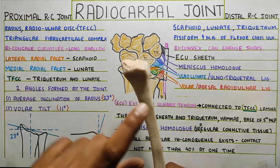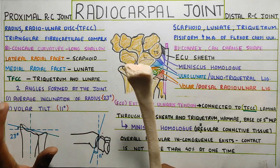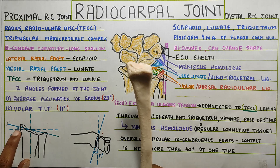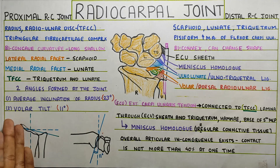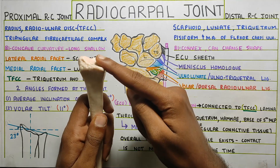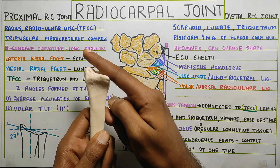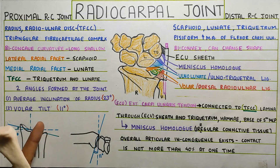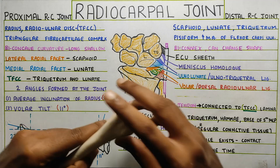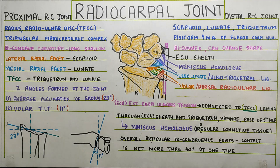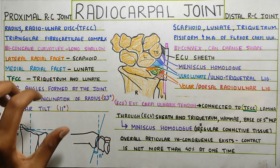At the radius, there are angles formed. First is the average inclination of the radius, which is around 23 degrees — the lateral part is slightly higher compared to the medial part, and this inclination is around 23 degrees as you can see, it's slightly inclined upwards. The second one is the volar tilt, which is around 11 degrees — basically your radius is slightly angled downwards as you can see. So those are the two angles seen at the radius.